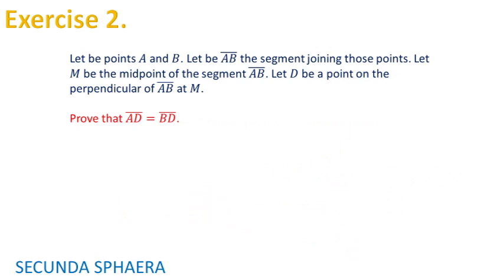Let's jump into the second exercise of this video. Let A and B be points. Let AB be the segment joining those points. Let M be the midpoint of the segment AB. Let D be a point on the perpendicular of AB at M. We are asked to prove that AD is equal to BD.